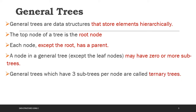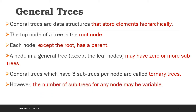All nodes are called a ternary tree. General trees which have three subtrees per node are called ternary trees. A general tree modification is called a ternary tree. The number of subtrees for any node may be variable.